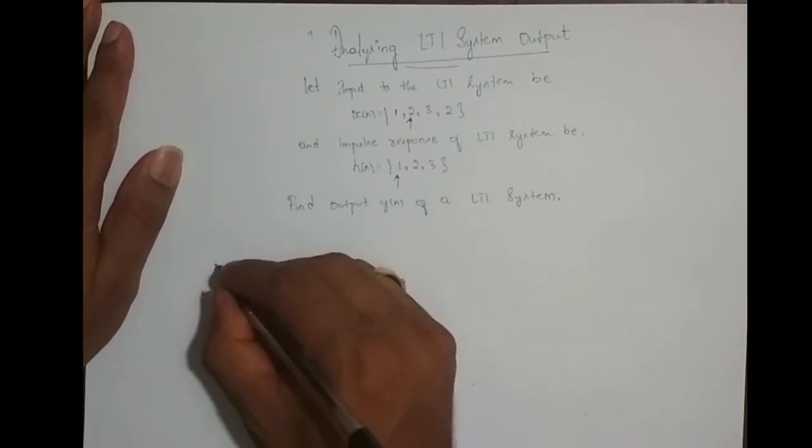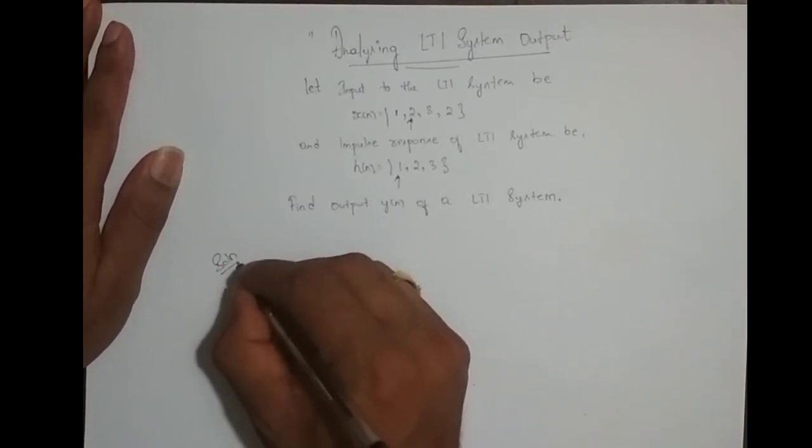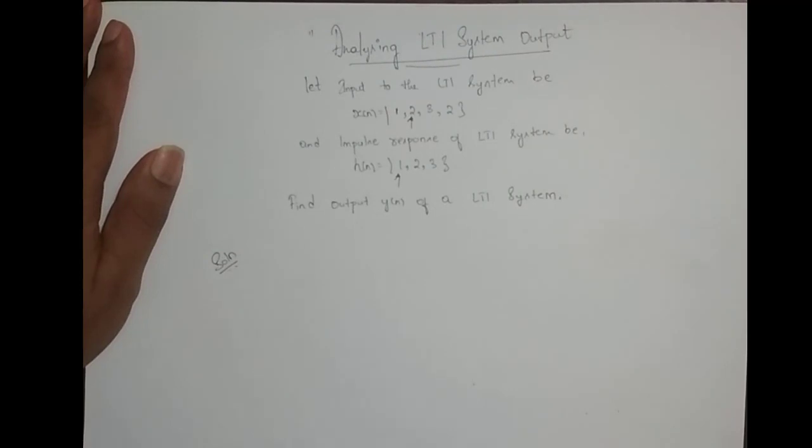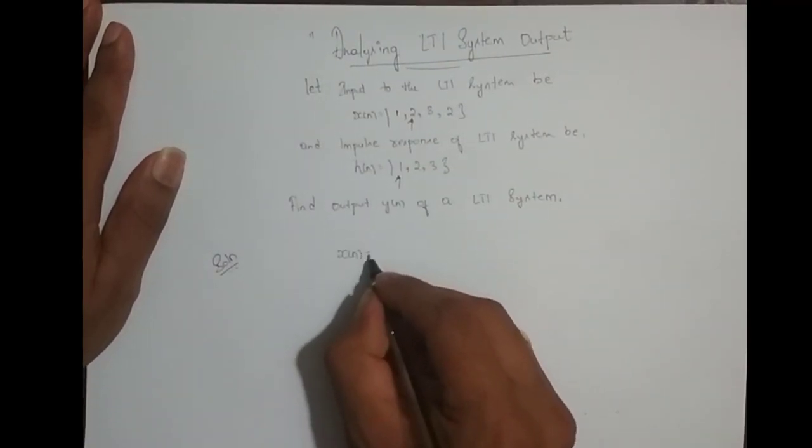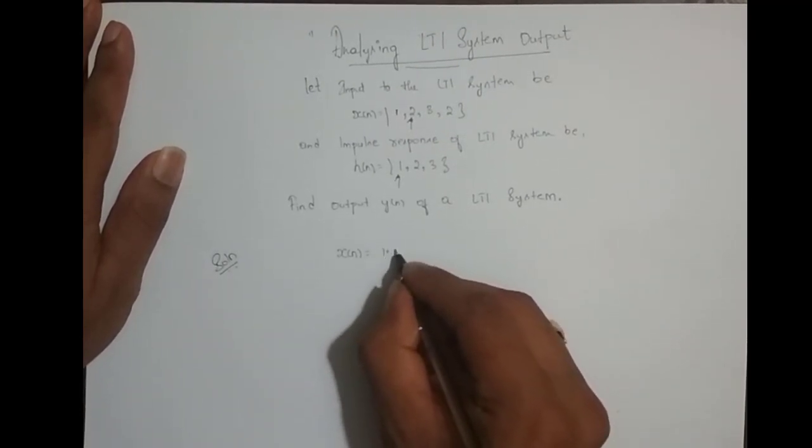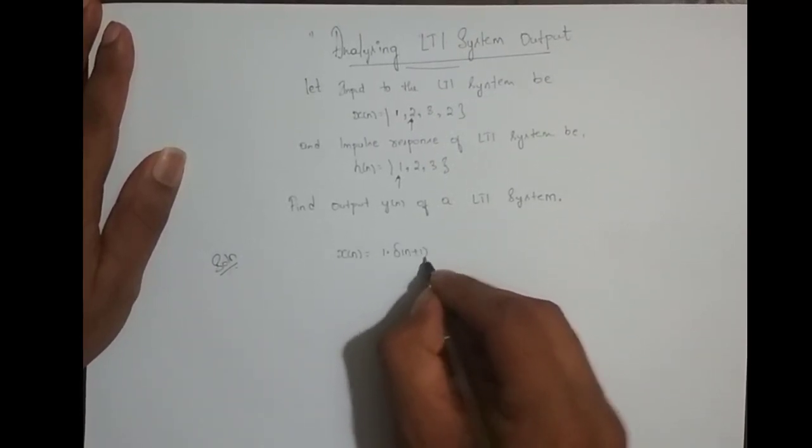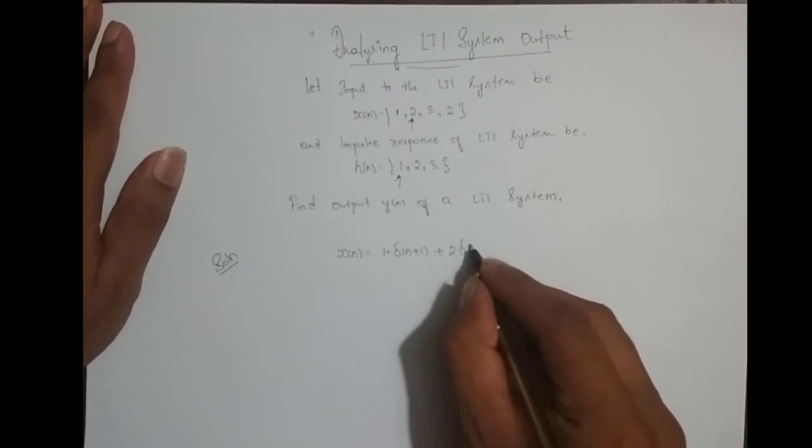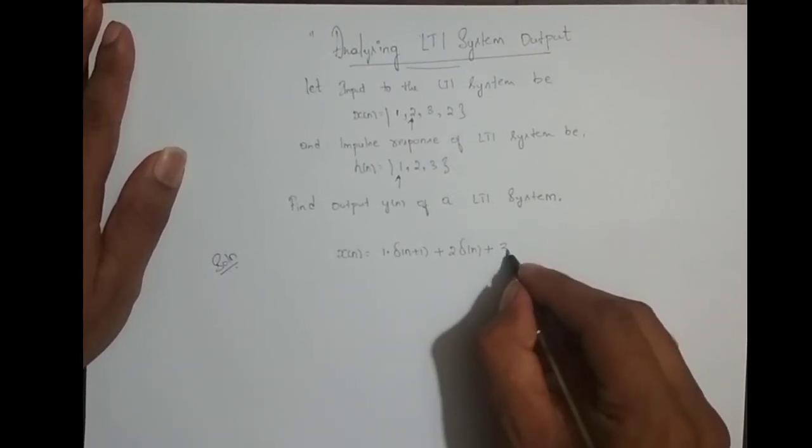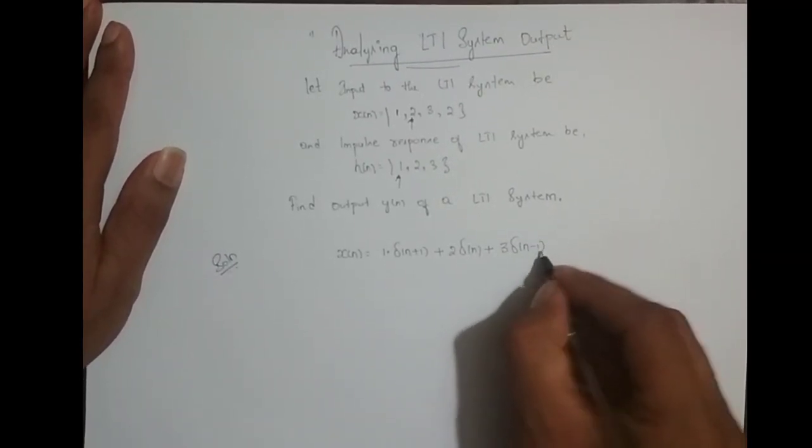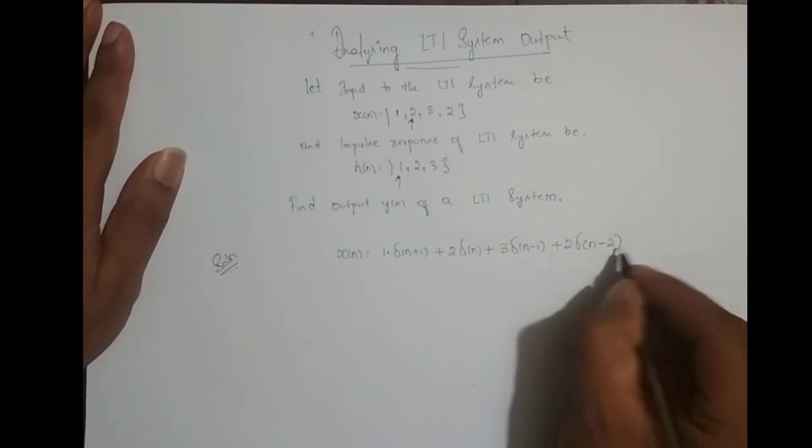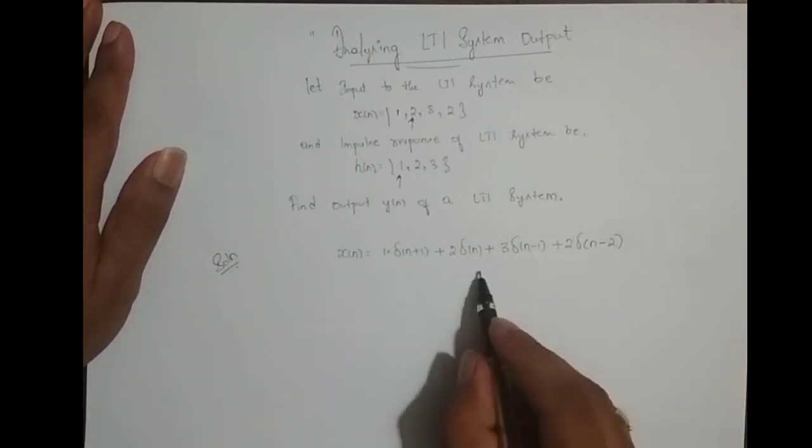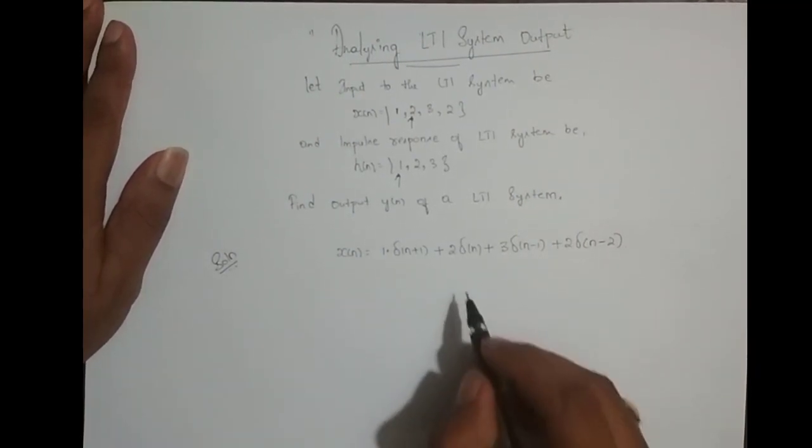So solution, what we do now, we split up the input signal. So x(n), I can write it as 1 times delta(n+1) plus 2 times delta(n) plus 3 times delta(n-1) plus 2 times delta(n-2). How did I write this sequence? You just refer my prerequisite videos.